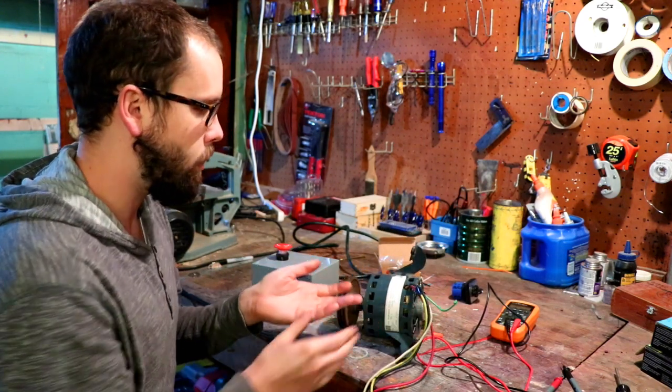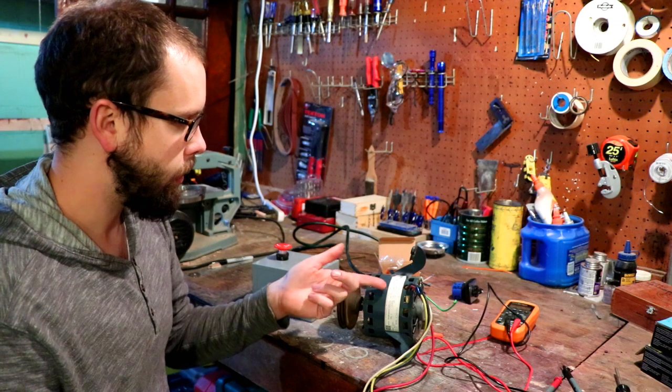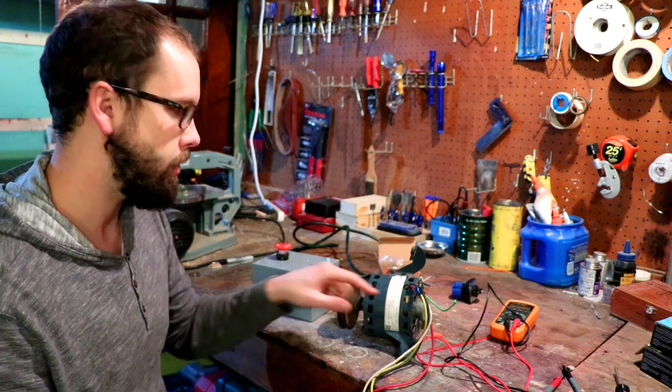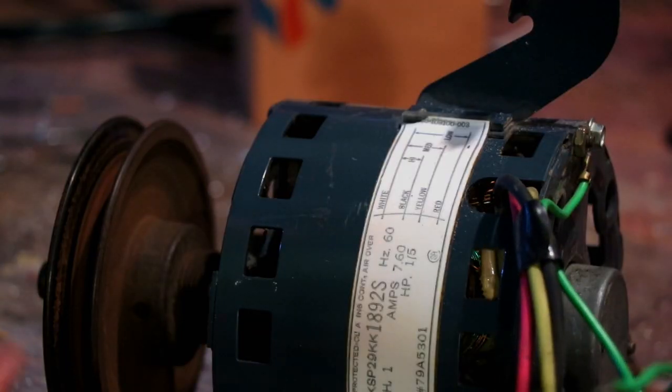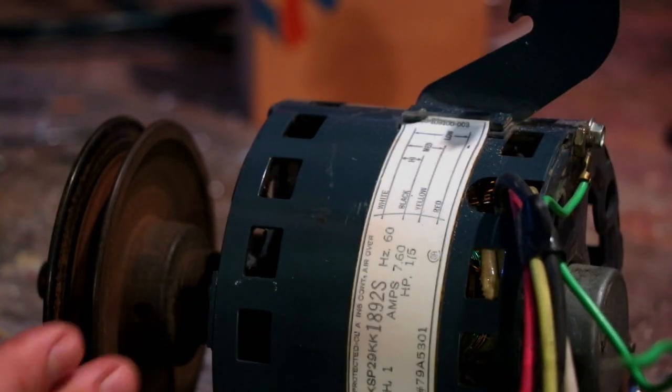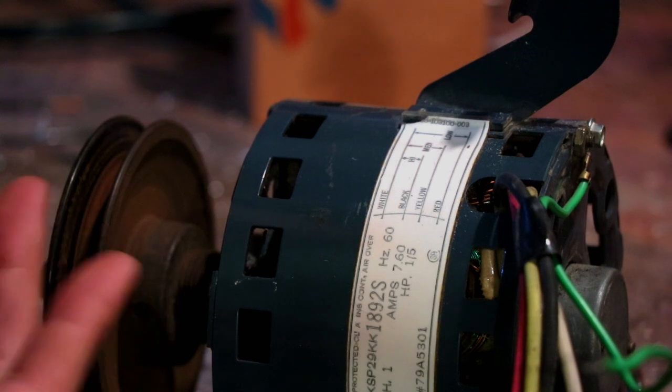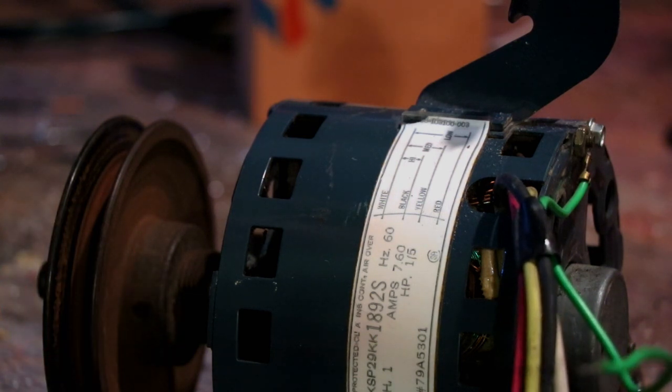So the first thing you're going to want to do is just look on the label. It should have a little wiring diagram on it. So I'll just zoom into this little diagram so you can see it. You can see our little diagram here on the motor and it basically shows how to wire each speed individually.